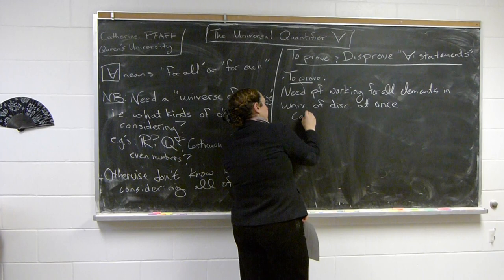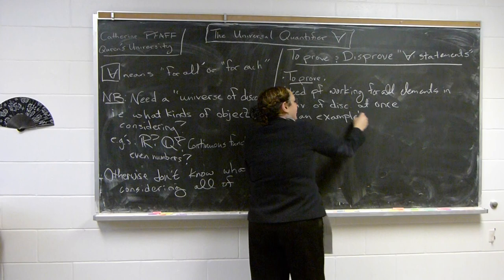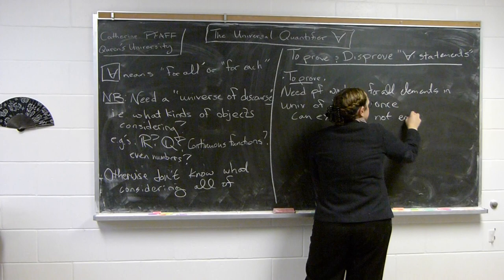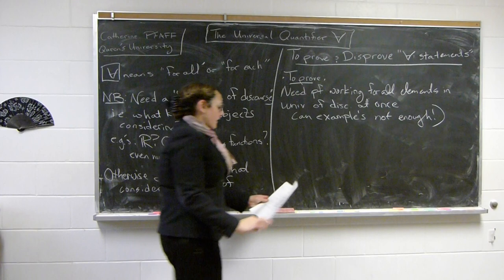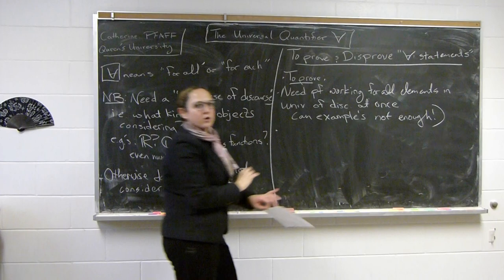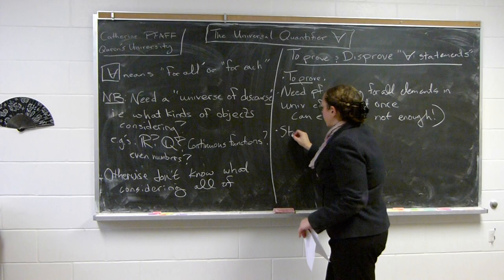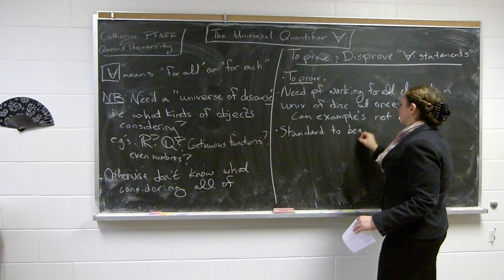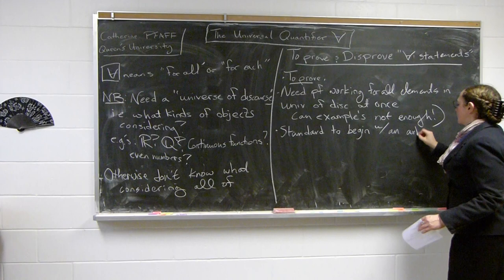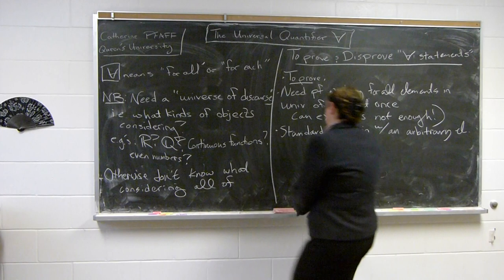You cannot just do this for a single example, or even for some number of examples that aren't all of them. The standard way to prove a 'for all' statement is to start with an arbitrary element of the universe of discourse, which makes it clear that the proof works for all elements.